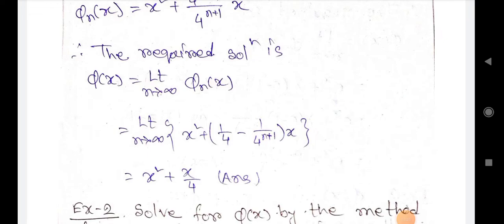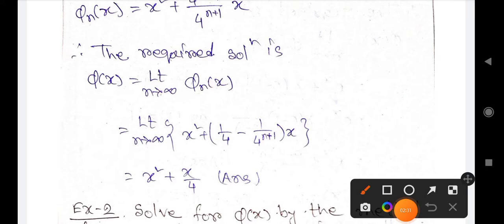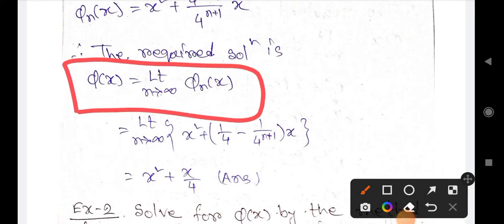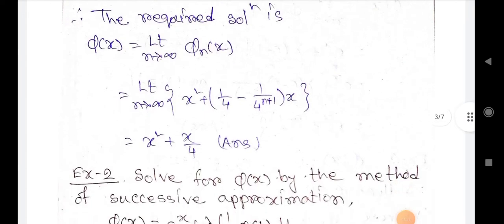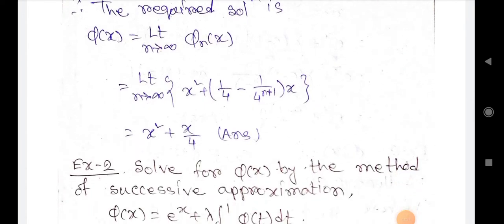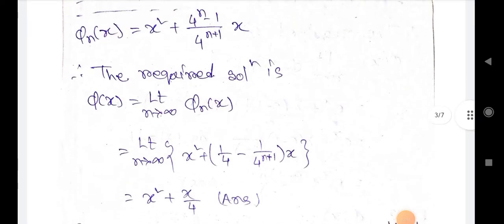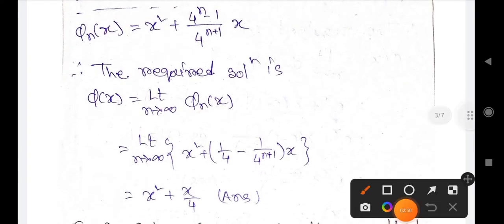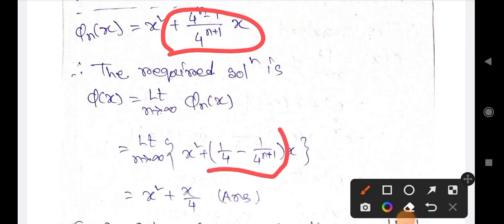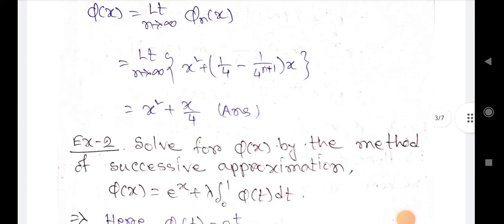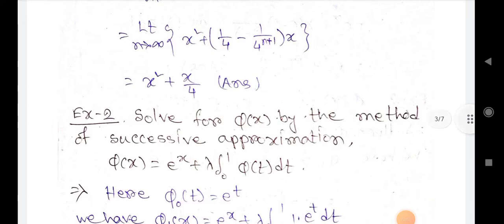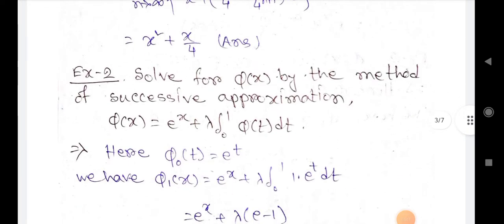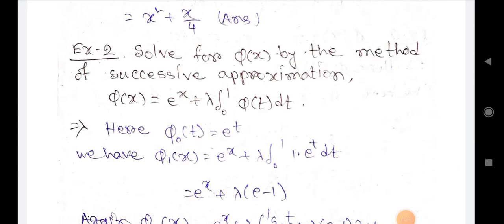The required solution is φ(x) = lim(n→∞) φₙ(x). Putting in the values, equals lim(n→∞) [x² + (1/4 - (1/4)ⁿ⁺¹)·x] = x² + x/4. This is the answer. Now Example 2: Solve for φ(x) by the method of successive approximation where φ(x) = eˣ + λ·∫₀¹ φ(t) dt.